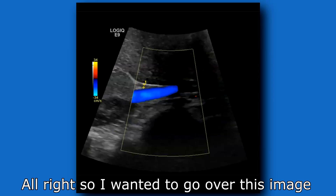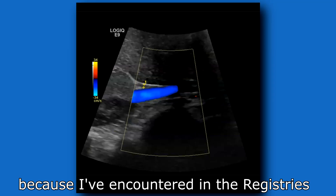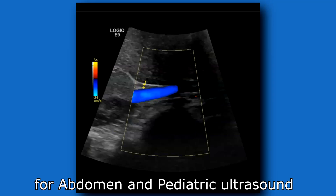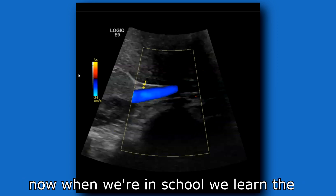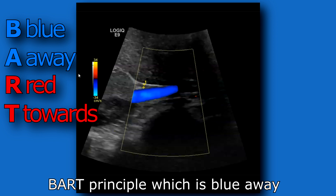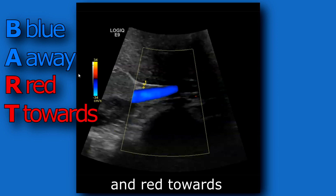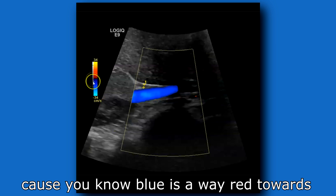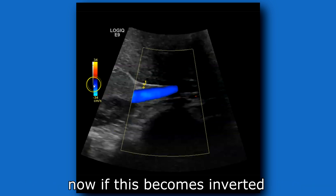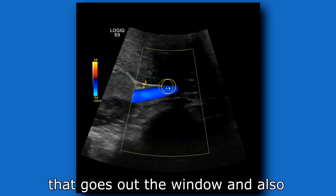I wanted to go over this image because I've encountered it in the registries for abdomen and pediatric ultrasound. Here we have an image of the portal vein. When we're in school we learned the BART principle — Blue Away, Red Towards — and that's a basic way to understand color Doppler, because blue is away and red is towards.